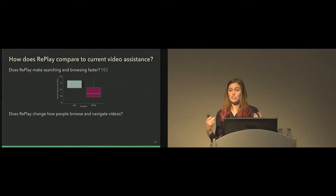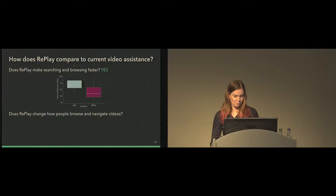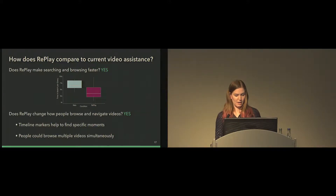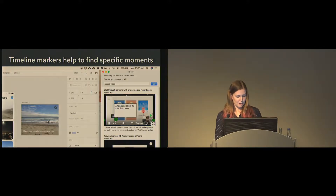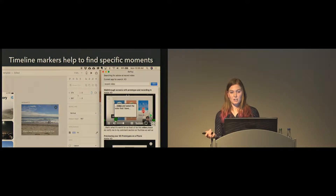For our second question — does Replay change how people browse and navigate videos — we turned to qualitative observations, post-study interviews, and a field study with seven participants who used Replay in the wild. We found it does change behavior in a few interesting ways, and we think this is mainly why it made people faster at searching. The first is the timeline markers: these helped people get to the information they needed more quickly rather than having to skim or skip through an entire video. Eight of the ten Replay participants who searched made use of these markers.